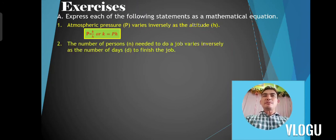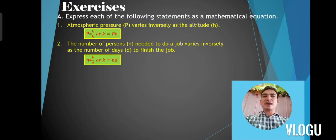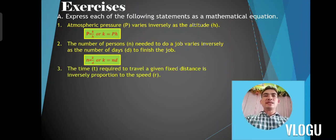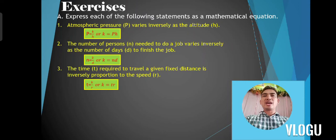Number 2: the number of persons needed to do a job varies inversely as the number of days to finish the job. The correct answer is N is equal to K over D, or K is equal to N times D. Number 3: the time required to travel a given fixed distance is inversely proportional to the speed. The correct answer is T is equal to K over R, or K is equal to T times R.